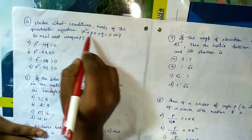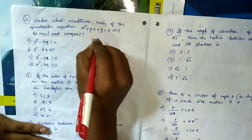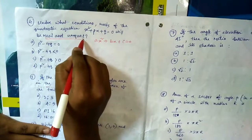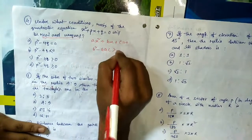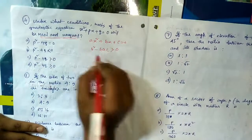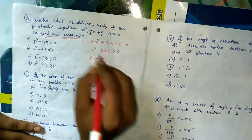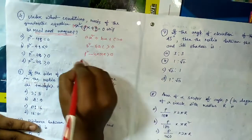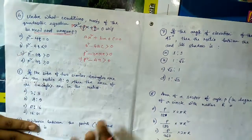Question number four: under what conditions will the roots of the quadratic equation x² + px + q = 0 be real and unequal? Using the discriminant formula b² - 4ac, here b = p, a = 1, and c = q. For real and unequal roots, p² - 4q must be greater than zero.